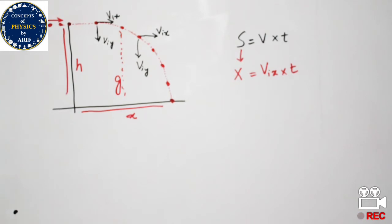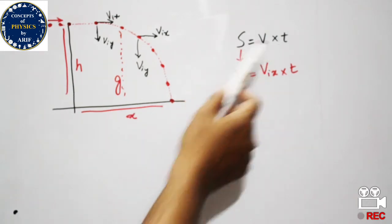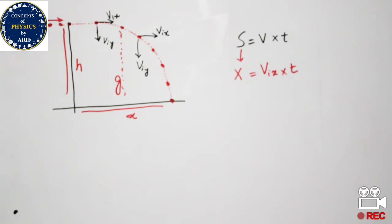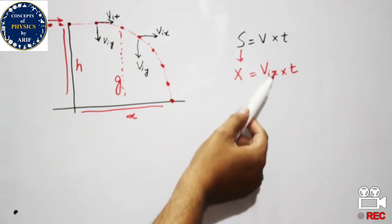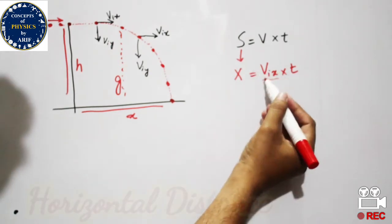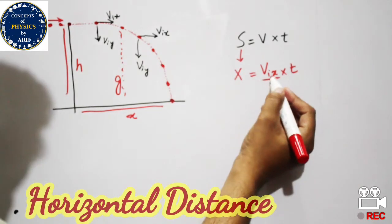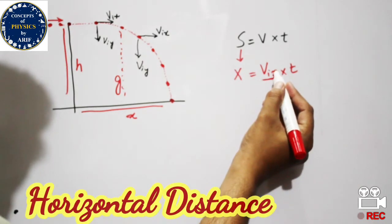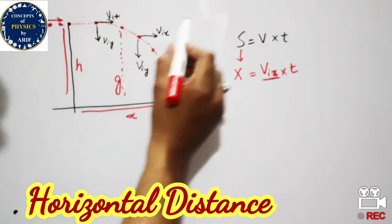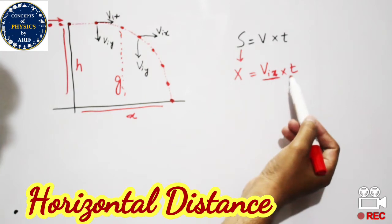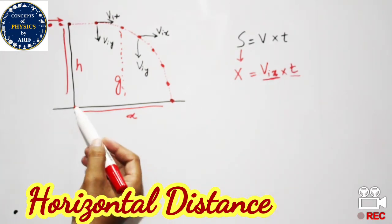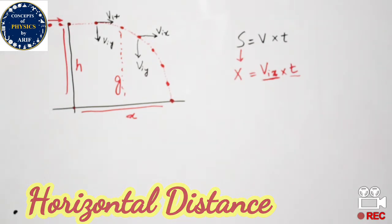This horizontal distance can be calculated from the expression S = V × T. Here S is the horizontal distance and V is the initial velocity with respect to the x-axis, because the ball is horizontally moved, multiplied by T — the time of flight when it hits the ground.